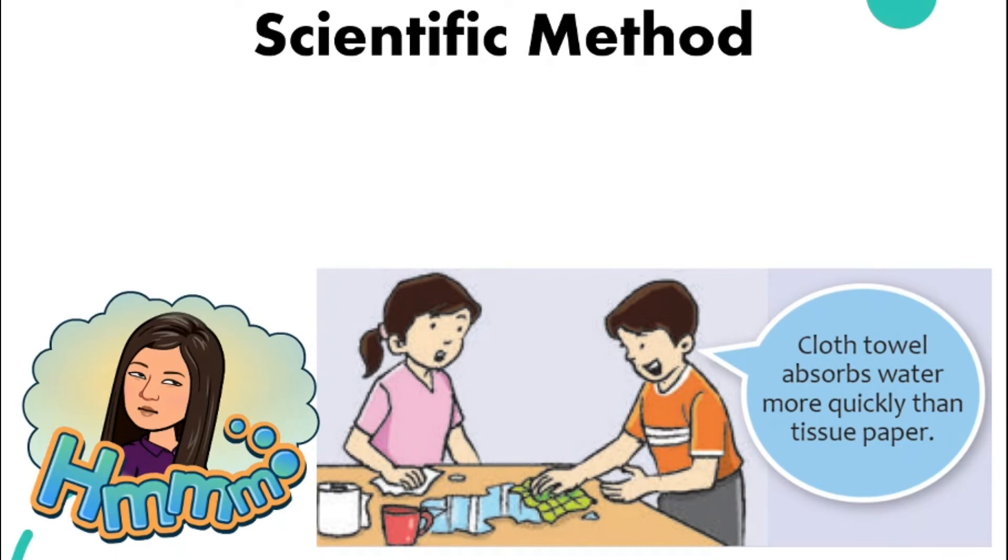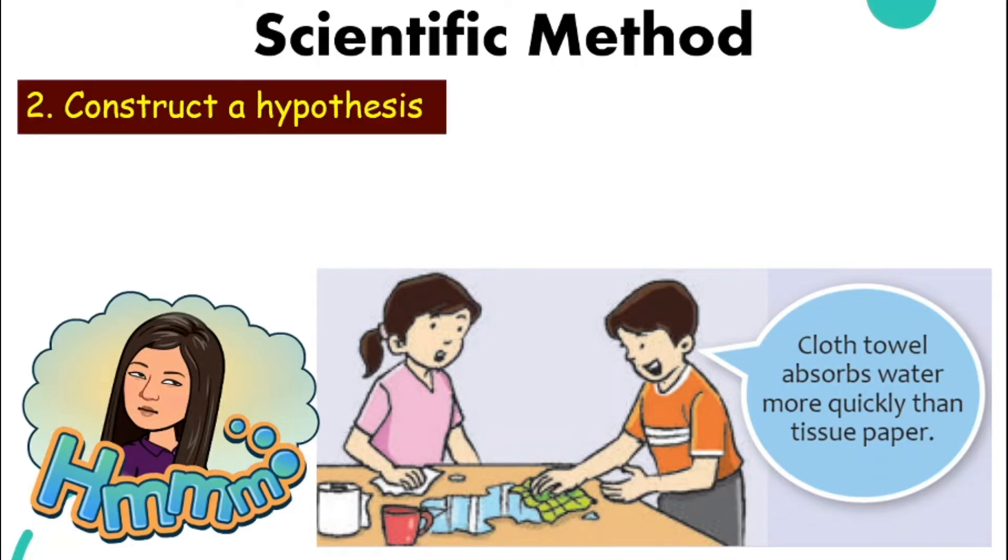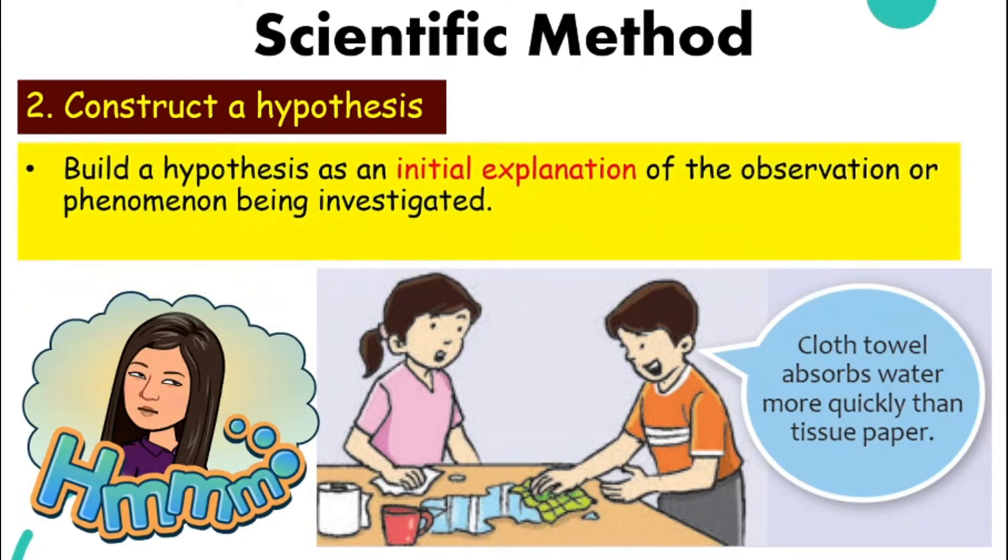Secondly, look at this boy. The boy comes and says, cloth towel will definitely absorb water more quickly compared to tissue paper. He made this statement before he tried it out or before he carried out an investigation. This is called a hypothesis. Step number two: we construct a hypothesis. Hypothesis is the initial explanation of the observation before we start investigating, before it is proven, and this hypothesis needs to be tested properly.